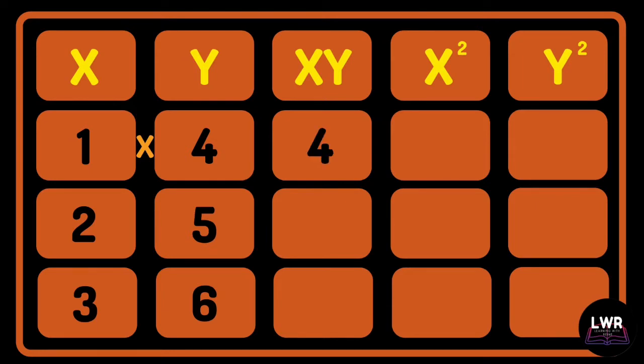1 times 4 is equal to 4, 2 times 5 is equal to 10, and 3 times 6 is equal to 18.